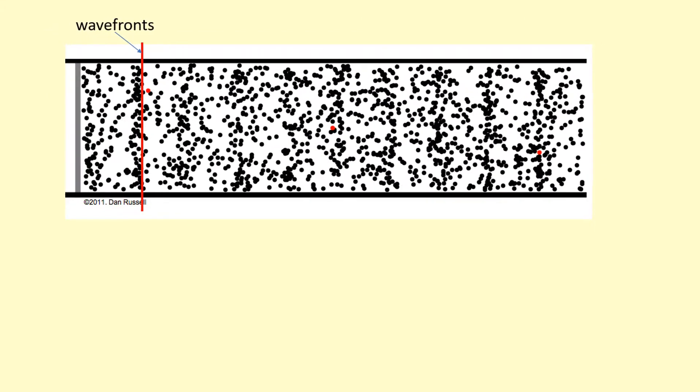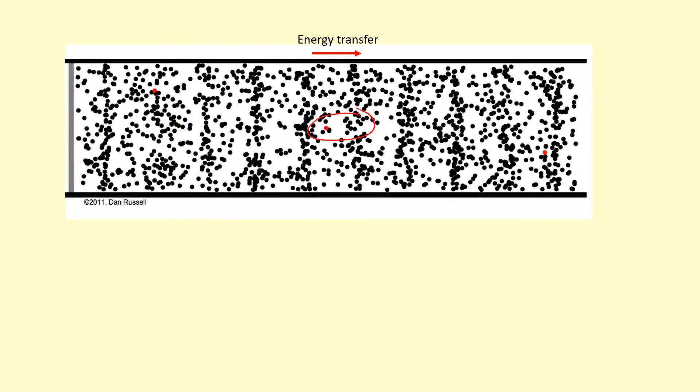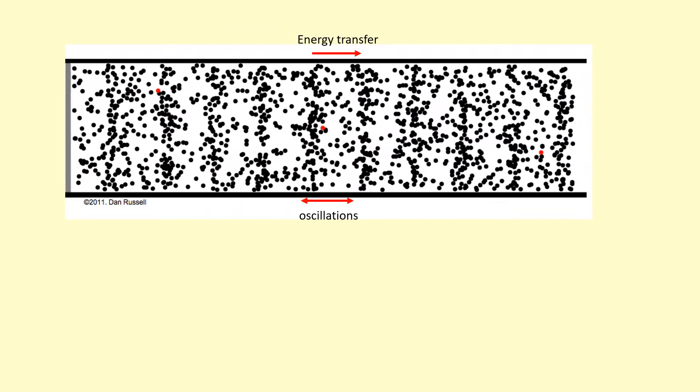This is a longitudinal wave. If you look at it very carefully you can see the wave fronts moving towards the right. That's because that's the direction of energy transfer. But if you look at the particles themselves, they're not actually moving, they're oscillating. And in this case they're oscillating parallel to the direction of energy transfer.